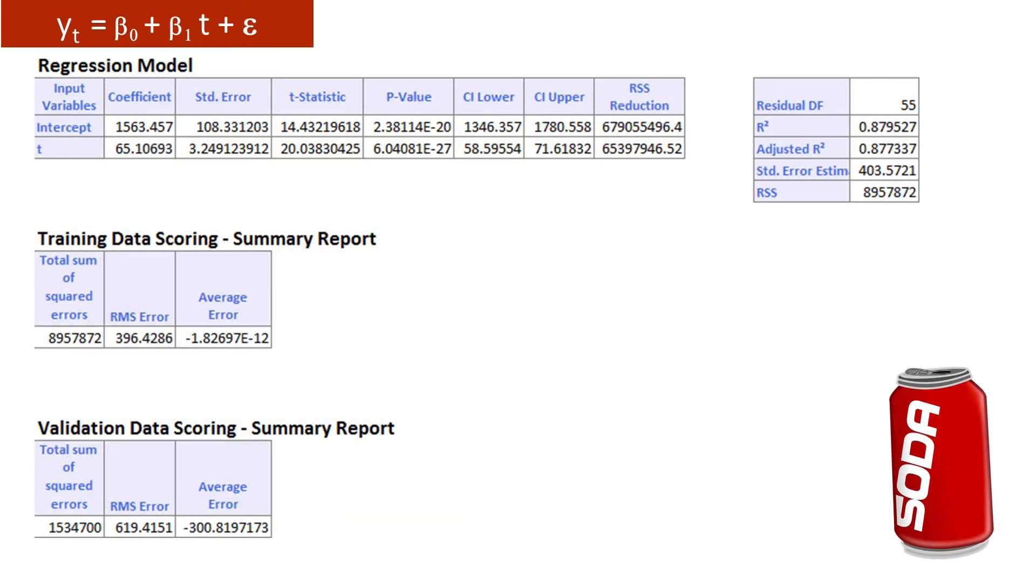Here's the output from Excel Miner. From the output alone, we cannot tell whether this is a good model. For example, if you look at the p values or the R square value, you might think this model is pretty good. However, in terms of predictive power, the story is different.